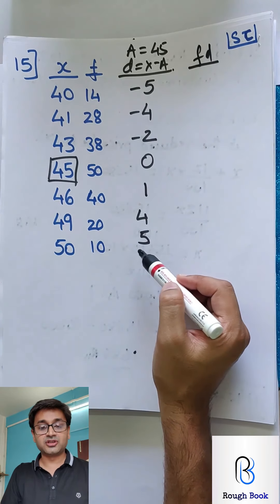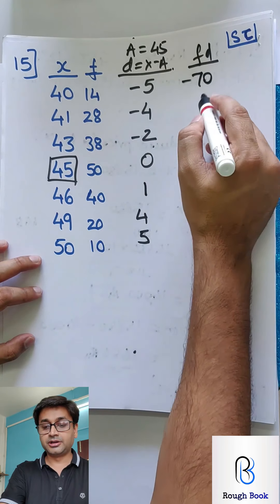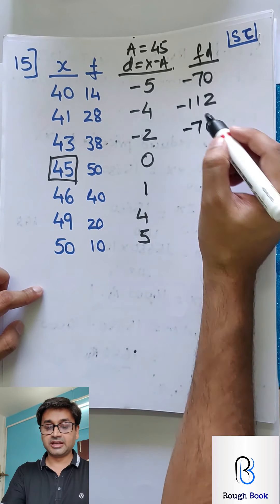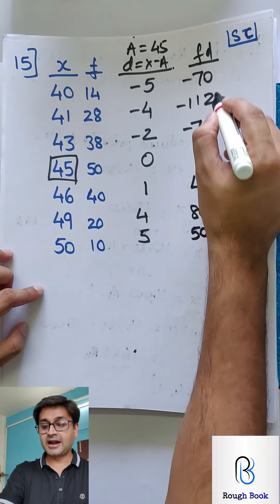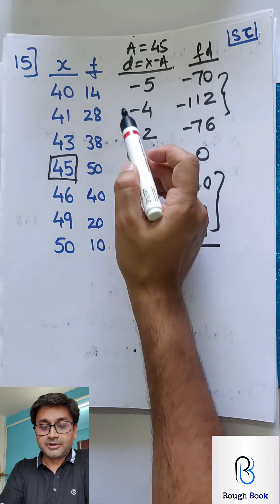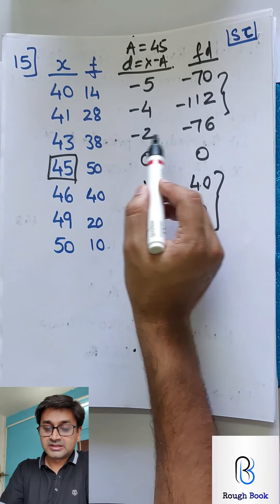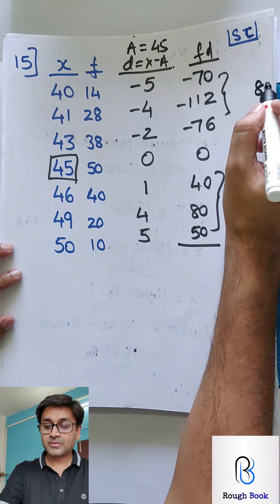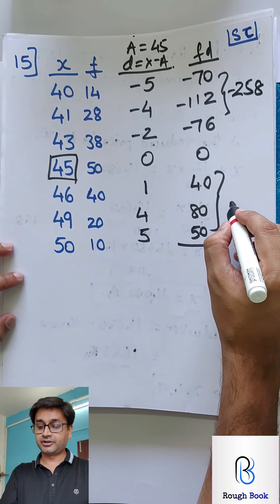Once we get D, create the final column FD — F is your frequency, D is what you just achieved, so multiply them. Add all the negatives, add all the positives, then subtract to get the final value. Total of negatives: 258. Total of positives: 170. The difference is 88 negative as summation FD. Get the total of frequencies as summation F. The formula to calculate mean now is: A plus summation FD divided by summation F.